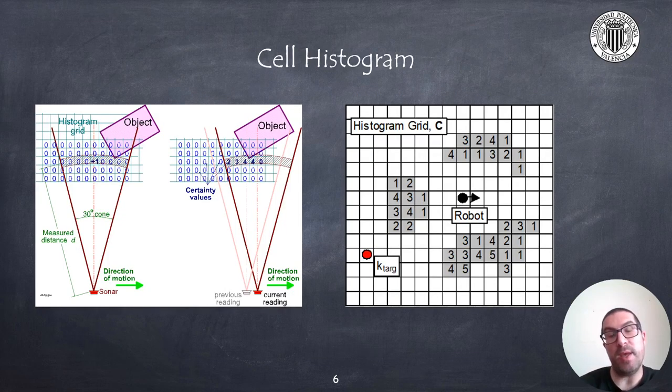In order to implement those techniques, we need a first step, which is basically to build a cell histogram whose values are updated based on the range sensor measurements after several passes, and they will provide, somehow, a certainty of the cell being occupied. This process can be improved if we use occupancy maps, which provides the likelihood of each cell being occupied.